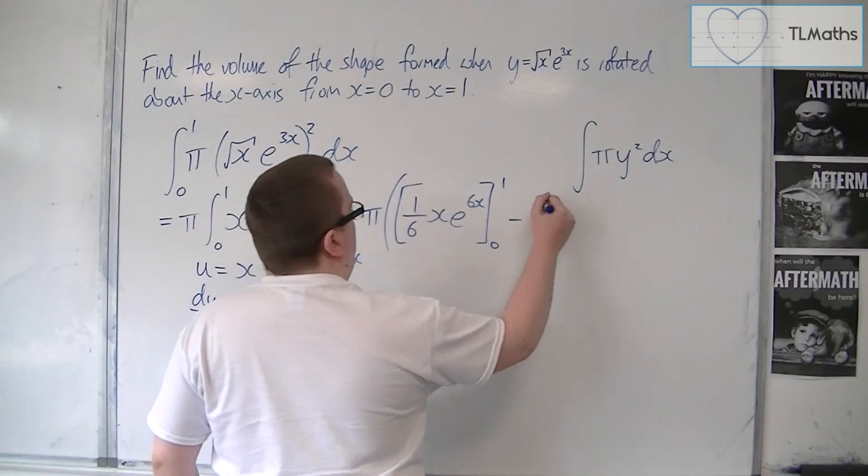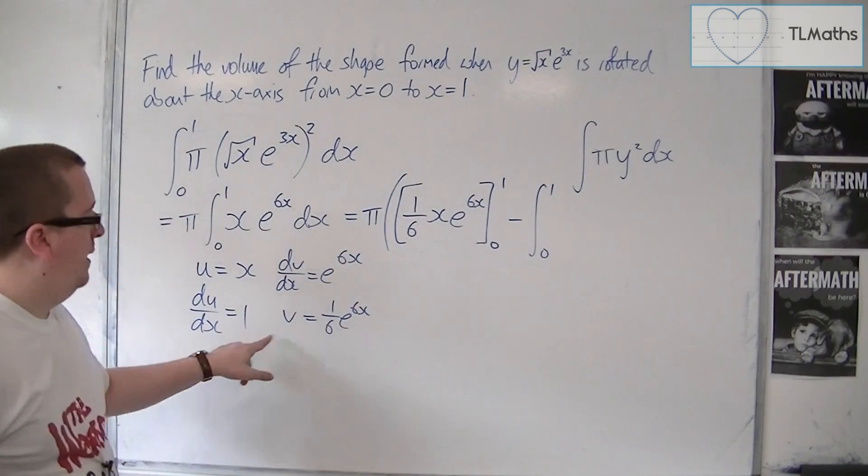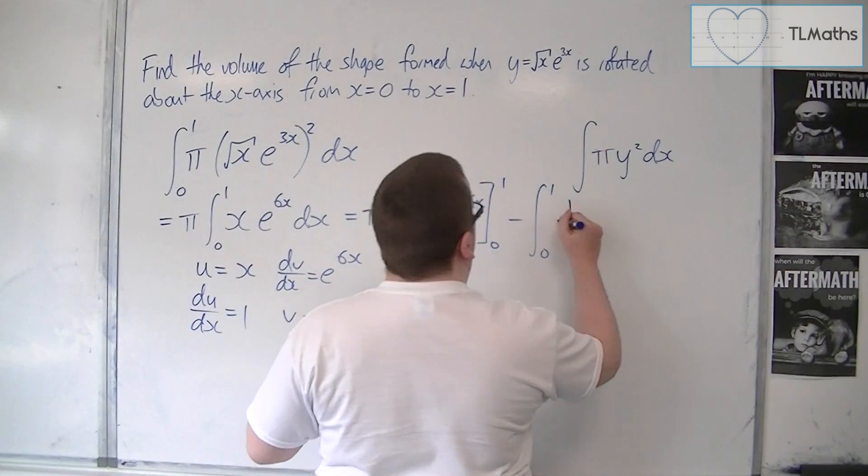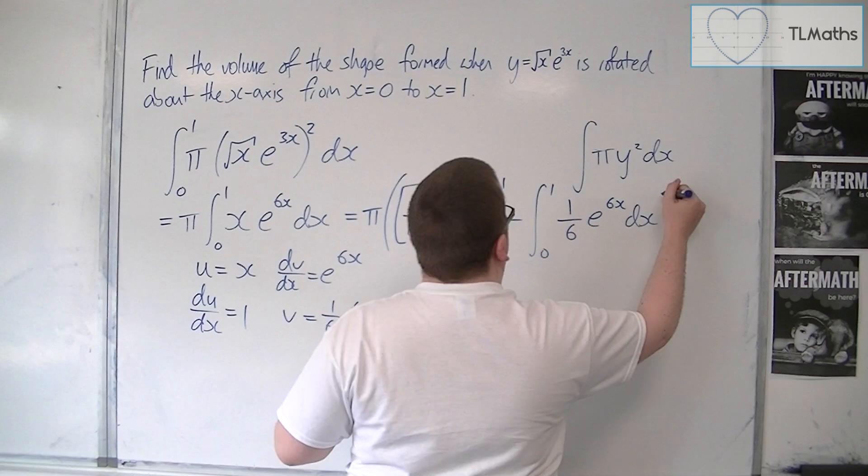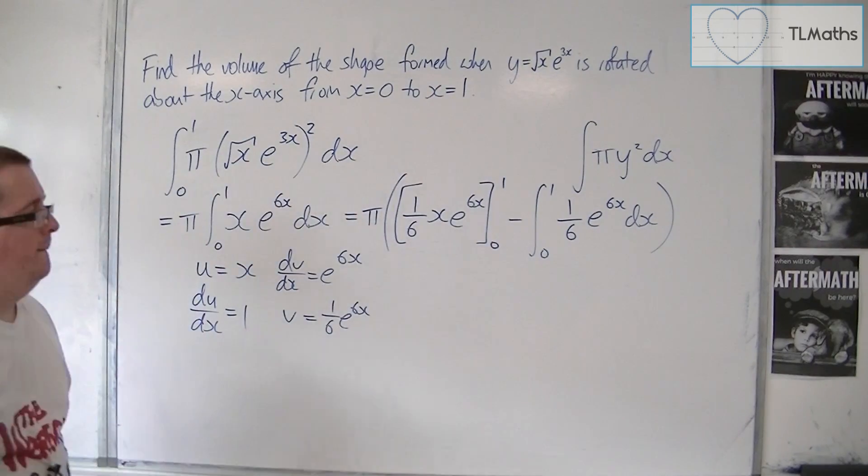Take away the integral between 0 and 1 of v du by dx, so 1 sixth e to the 6x dx, and then close the big bracket.